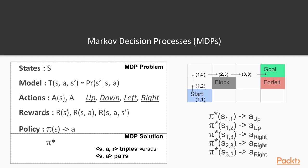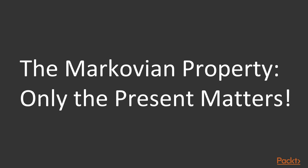Model-free reinforcement learning problems have no information about these transition probabilities. Additionally, we should mention the Markovian property, which is that only the present matters. What this means is that in our transition function, the probability that you transition to new state S prime, given that you took action A, only depends on the current state S. It is not related or dependent on any other states that you visited previously.